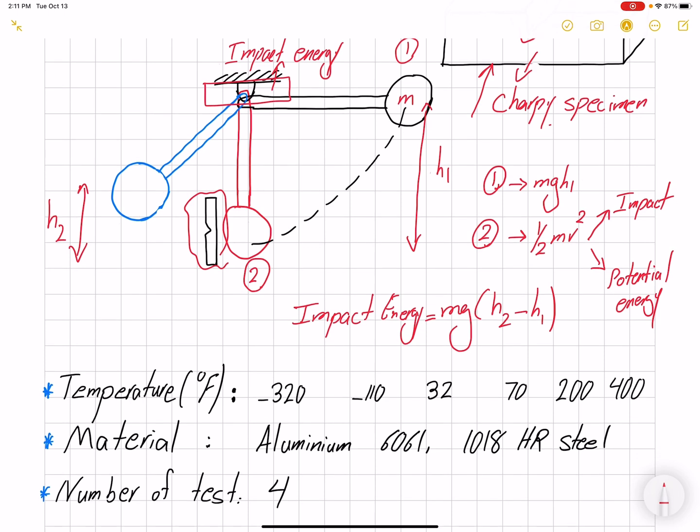In this lab, in addition to getting the impact energy, we want to test our specimen at different temperatures: as low as -320°F by immersing samples in liquid nitrogen, -110°F for dry ice, 32°F ice bath, 70°F room temperature, and 200°F and 400°F by putting samples in the furnace.